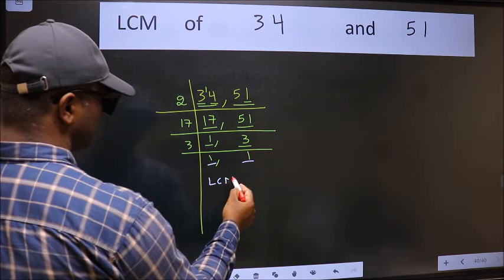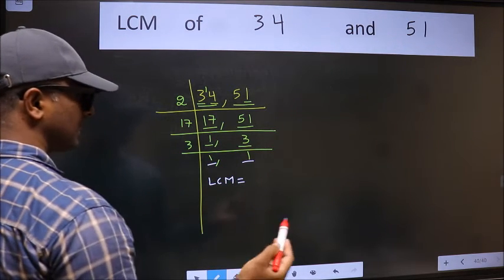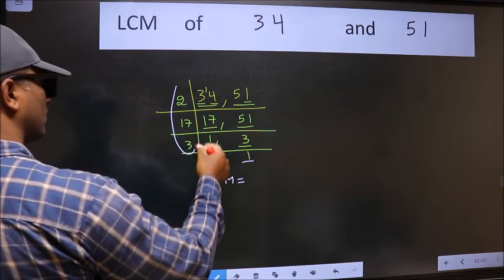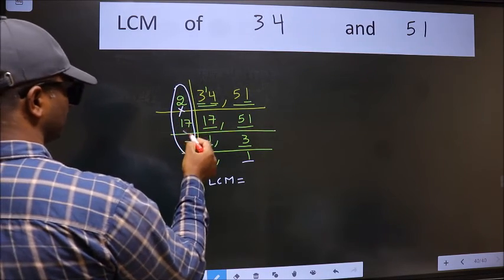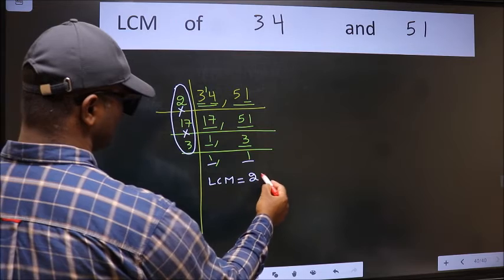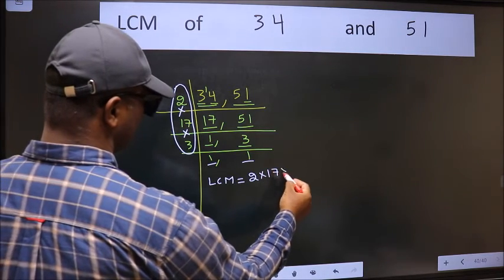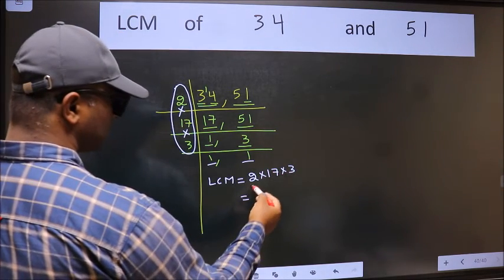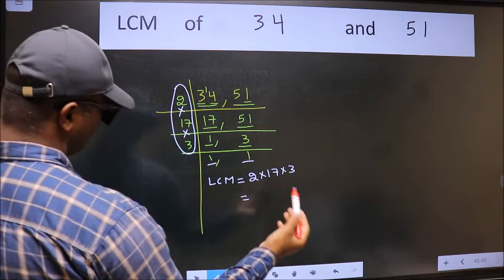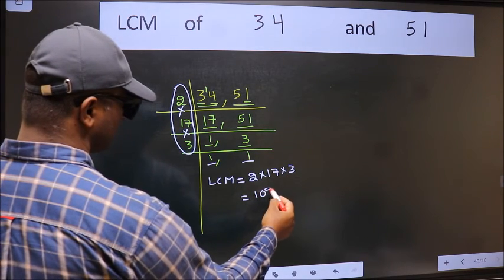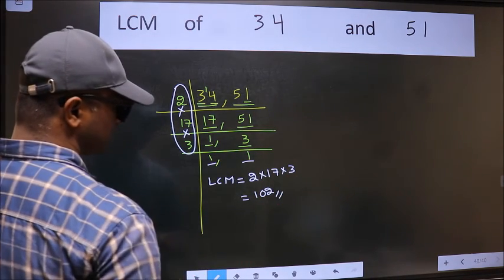So our LCM is the product of these numbers. That is 2 times 17 times 3. When we multiply these numbers, we get 102 as our LCM.